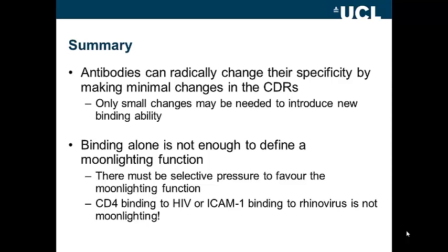Returning to the example of antibody AF14 that binds E5.2, which in turn binds D1.3, which binds lysozyme — could E5.2 or D1.3 be considered to be moonlighting? After all, they both bind to two distinct proteins. In my opinion, no. Binding alone should not be considered to be a moonlighting function, unless there is some selective pressure for that binding to be maintained. The ability of CD4 on T-cell surfaces to bind HIV, or for ICAM1 to bind rhinovirus, cannot be considered a moonlighting function — indeed, there is selective pressure for these things not to occur. On the other hand, if a pathogen is able to exploit an existing protein to act as an adhesin or a virulence factor in order to allow infection, that is a clear case of moonlighting.